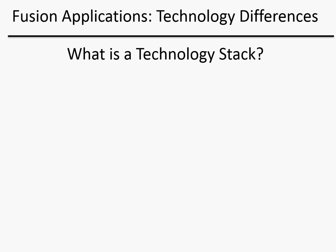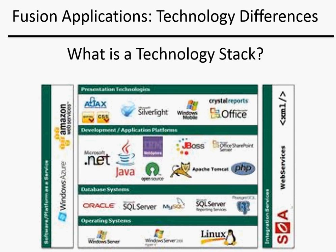What exactly is a technology stack? You can think of a technology stack as all the different technologies that deliver end-user information to the end user — from the bottom up, from the operating system and hardware to the database to the middleware technologies, all the way through to the technologies that the end user uses to access information.